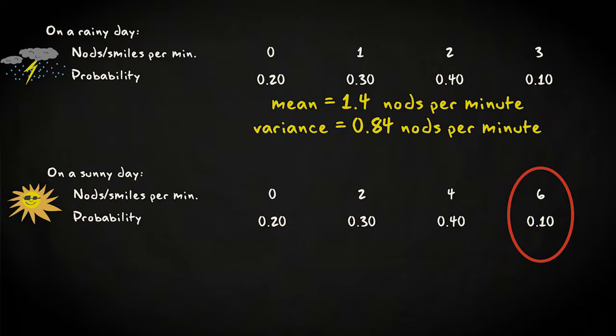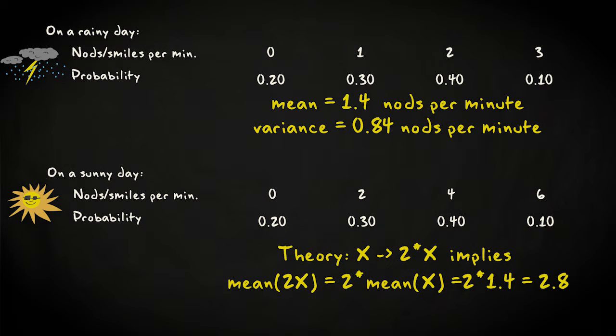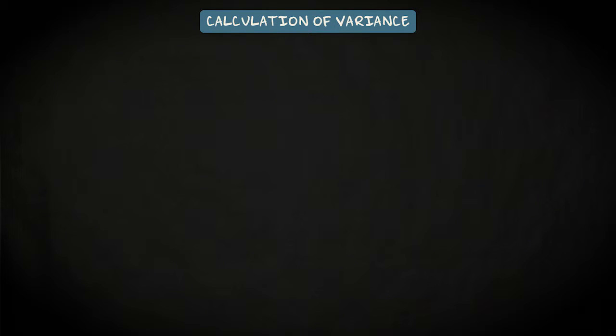Theory tells that the average number of nods should become 2 times 1.4, so 2.8. And the variance should go from 0.84 to 4 times that value, which is 3.36. Let's check this by calculating the variance for the new distribution.